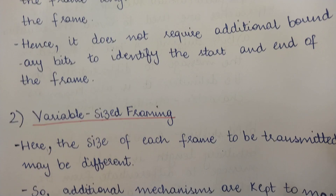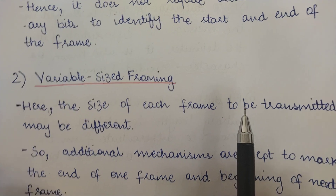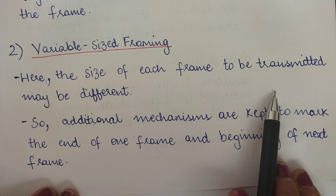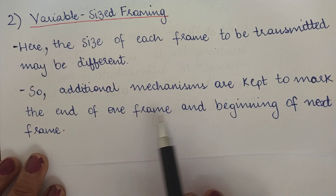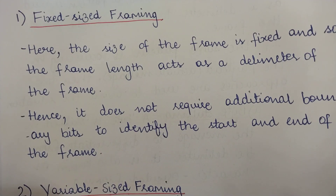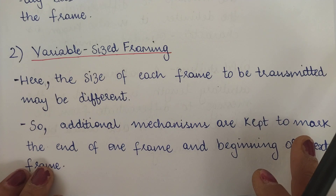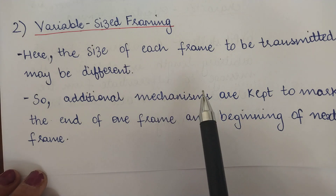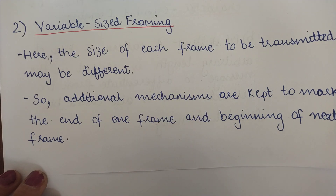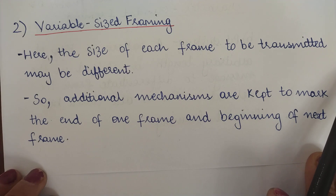In variable size framing, the size of each frame may be different — there is no requirement that all frames have the same number of bits. An additional mechanism is required to mark the end of one frame and the beginning of the next. In fixed size framing the receiver can easily identify frame boundaries because the size is fixed, but in variable size framing the number of bits in each frame may vary, so a mechanism is needed to let the receiver know when a new frame has started and when the previous frame has ended.